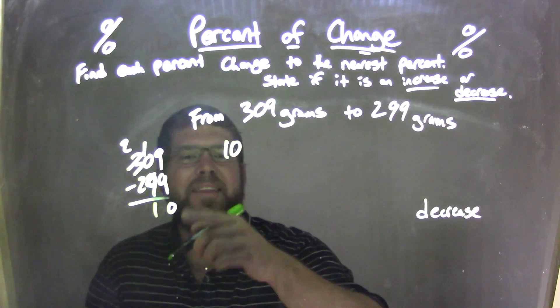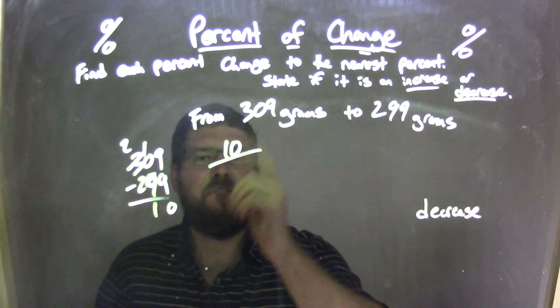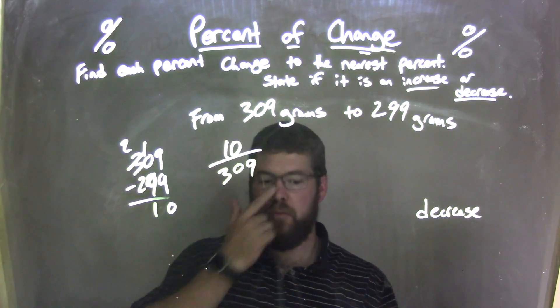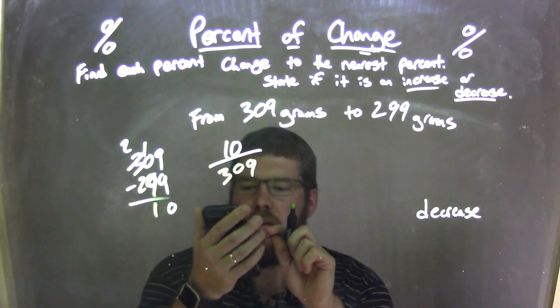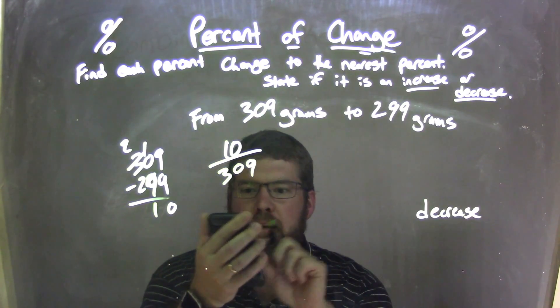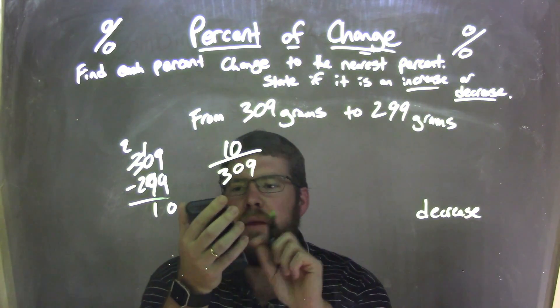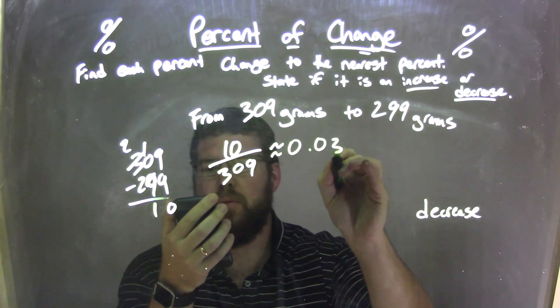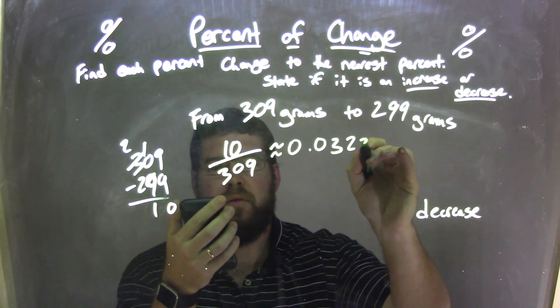So we have 10 here, we take that 10 and we divide it by our first number, 309. So 10 divided by 309, let's use our calculator here, it's going to be a small little percent. 10 divided by 309, and we're left with approximately a decimal of 0.03236.